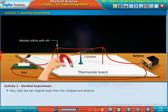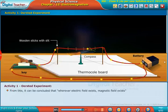Now take the bar magnet away from the compass and conclude that wherever electric field exists, magnetic field exists.